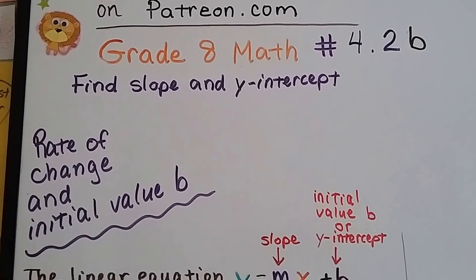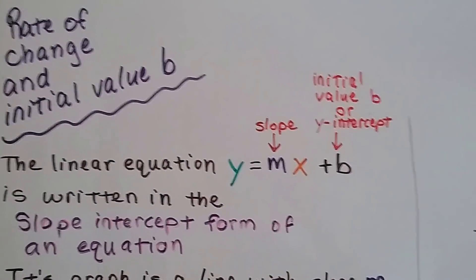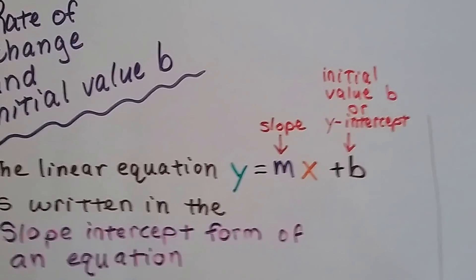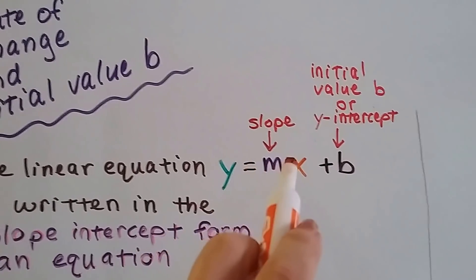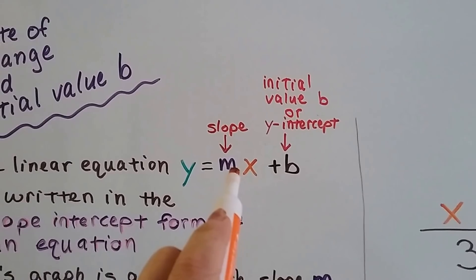Grade 8 math number 4.2b, the rate of change and initial value b. A linear equation, this y equals mx plus b, we now know that this m is the slope.